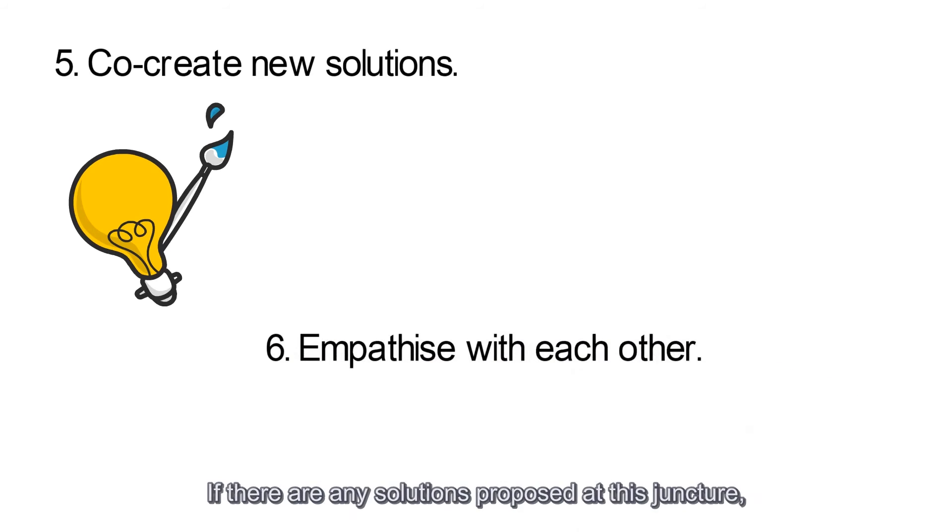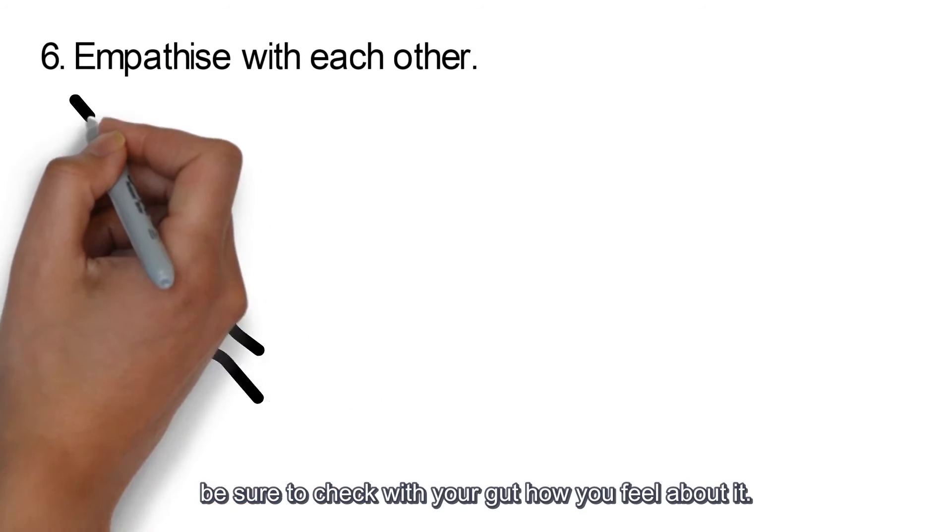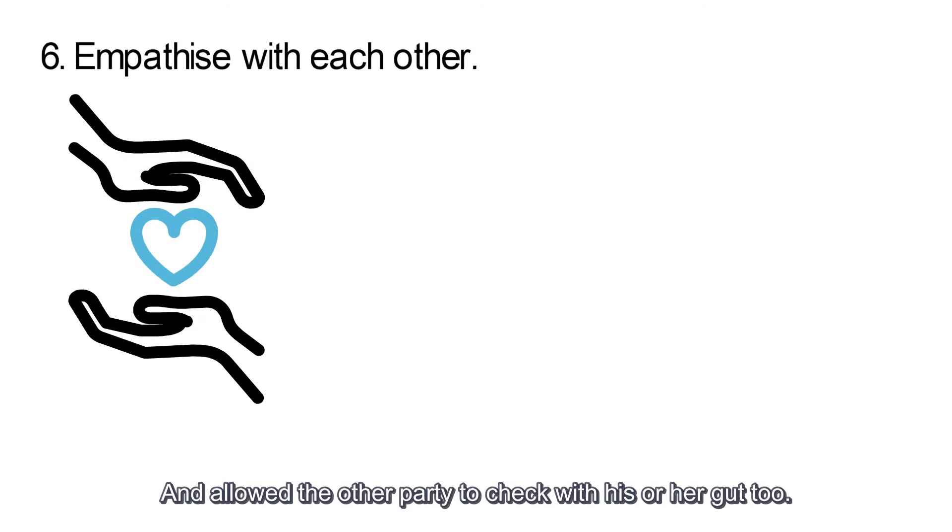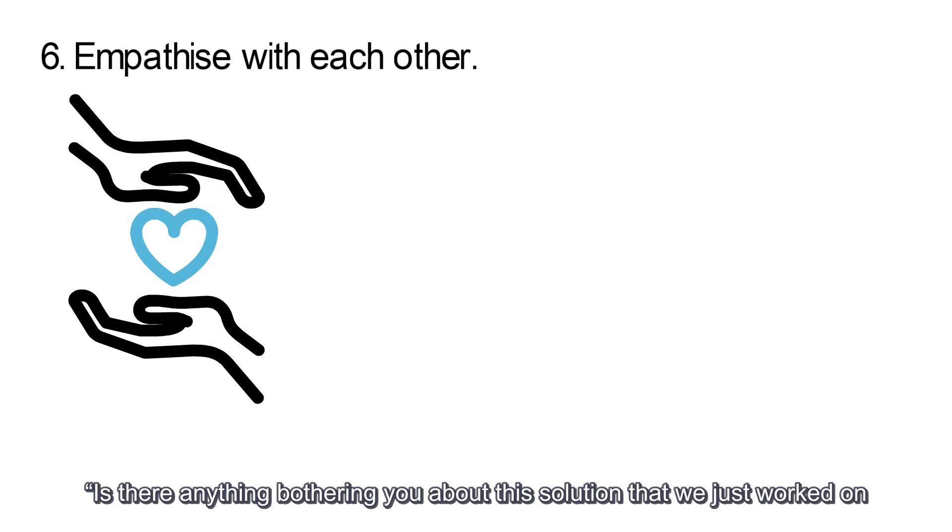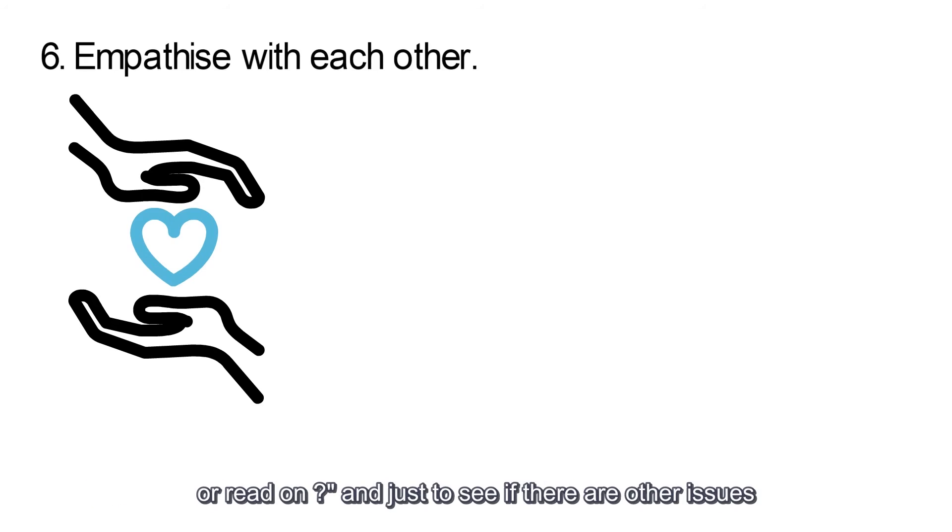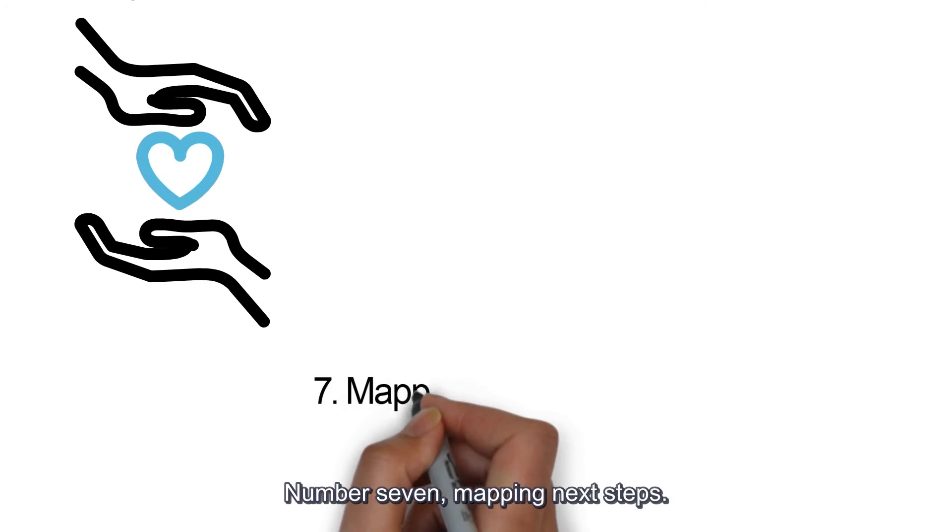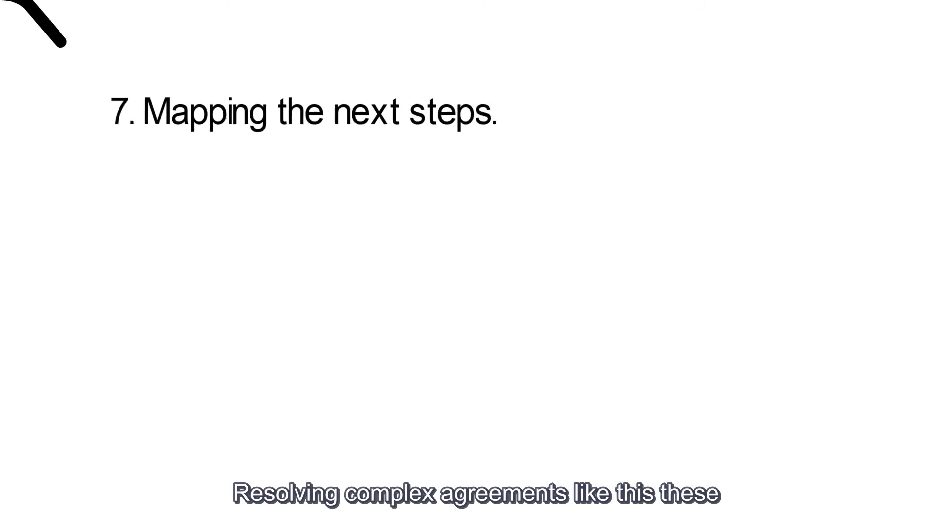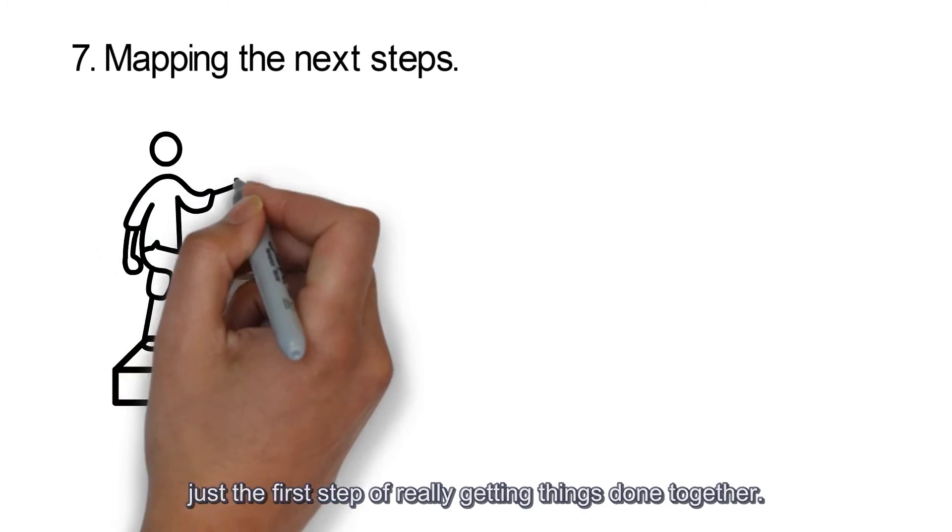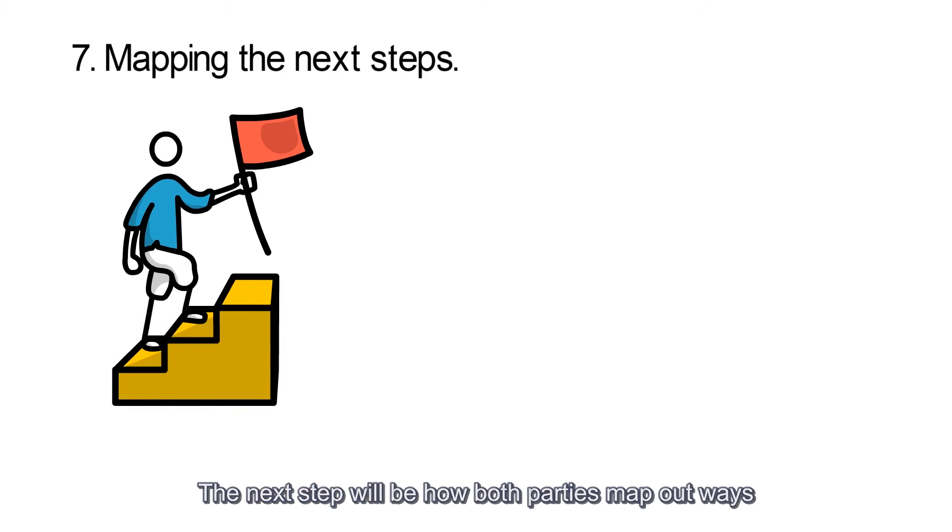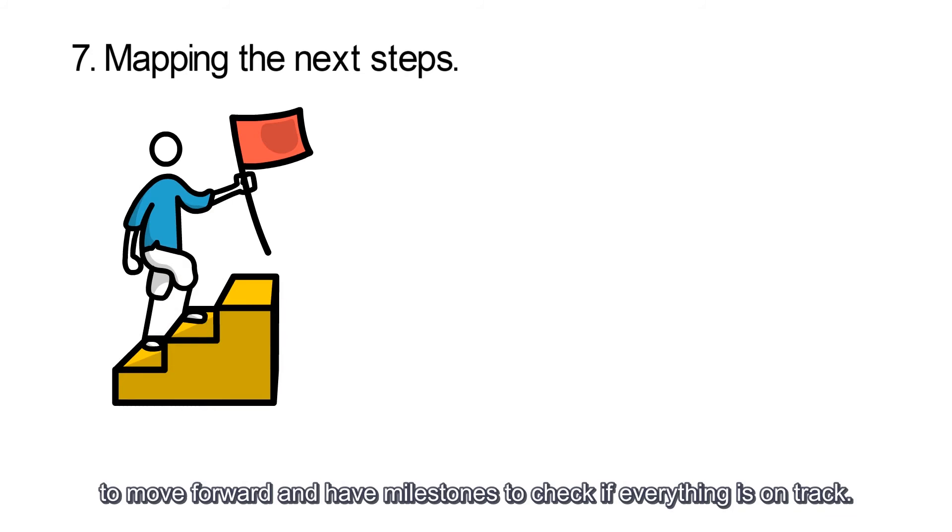6. Empathize with each other. If there are any solutions proposed at this juncture, be sure to check with your gut how you feel about it and allow the other party to check with his or her gut too. Check for signs in the other party if he or she is feeling positive or negative about the solution. If the gut feel is negative, it will not be done. You may need to ask a question such as, Is there anything bothering you about this solution that we just worked on or agreed on? This is to see if there are other issues that you need to resolve with the other person. 7. Mapping next steps. Resolving complex agreements like these is just a first step of really getting things done together. The next step will be how both parties map out ways to move forward and have milestones to check if everything is on track.